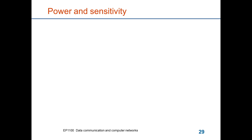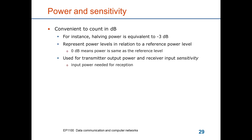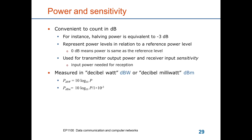When we talk about power and signal attenuation, it's often very convenient to count in decibels. For instance, by halving the power of a signal, it means that it has lost 3 dB in its strength. We can also represent power levels in relation to a reference power level, so that 0 dB means that the power is the same as the reference level — because the ratio p_in to p_out is 1, and the logarithm of 1 is 0. This is used for transmitter output power and receiver input sensitivity, measured in decibel-watt or decibel-milliwatt.